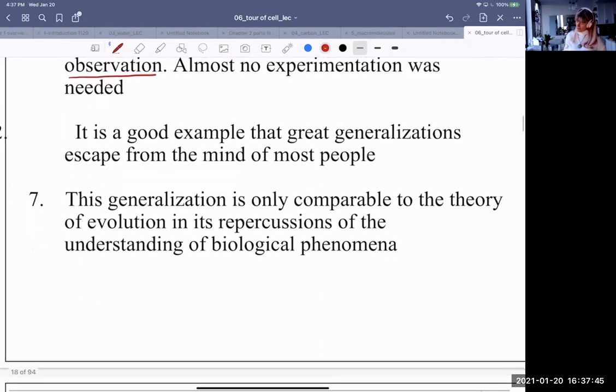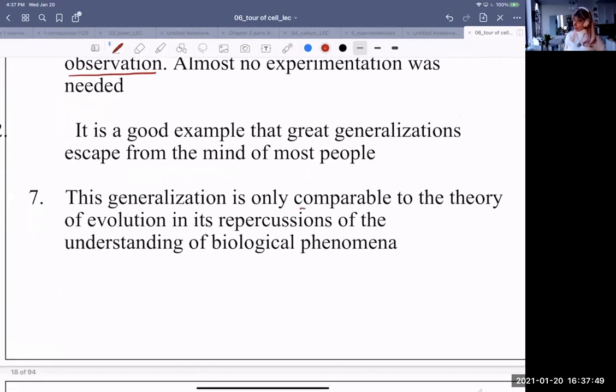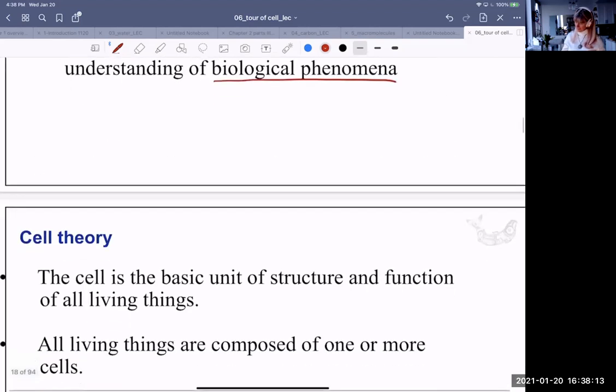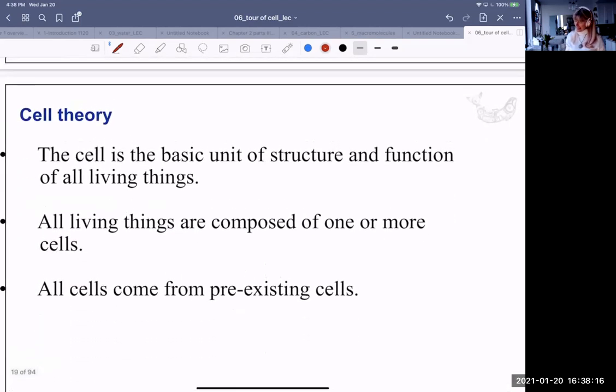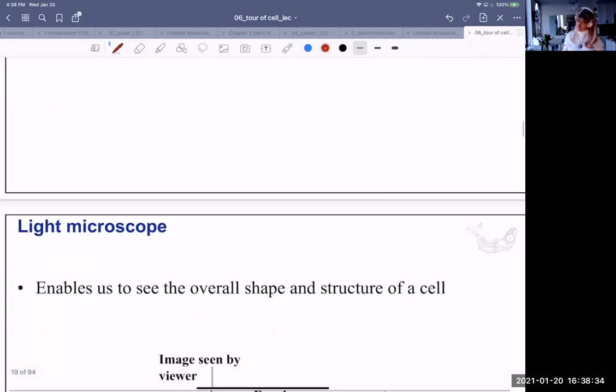Not experiments, but just observing a lot. It's really comparable to the theory of evolution and its repercussions of biological phenomena, probably the two most important theories ever to be developed. In other words, we know that a theory in science is such that it is facts that are backed up by many, many different observations and eventually experiments as well. So the cell theory states that the cell is a basic unit of structure and function of all living things, that all living things are composed of one or more cells, and that all cells come from pre-existing cells. That's cell theory.